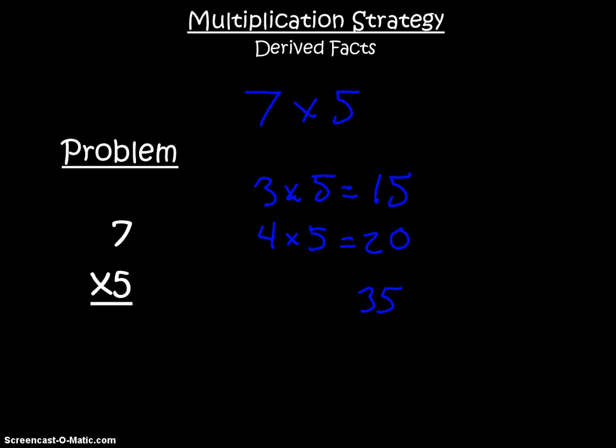But the great thing about derived facts is that I can use any facts that I know. Now, let's say that we want to think of this as 5 times 7, or 5 groups of 7. Maybe I don't know what 5 groups of 7 is, but I might know what 2 groups of 7 is. 2 groups of 7, or 2 times 7, is 14.